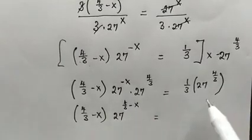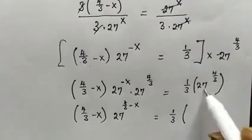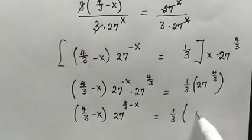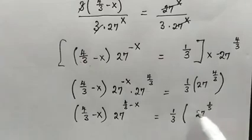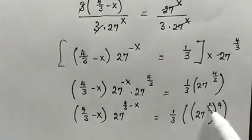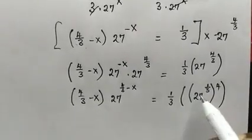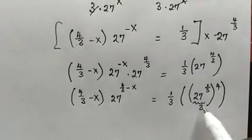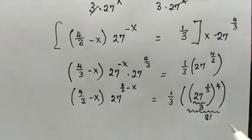This will be equal to 1 over 3. We need to simplify this. So 27 raised to the power of 4 over 3 is the same as the cube root of 27 raised to the power of 4. This is the same as 27 raised to the power of 1 over 3, then raised to the power of 4. The cube root of 27 is equal to 3, so we have 3 to the power of 4, which gives us 81. So here we have just 81.